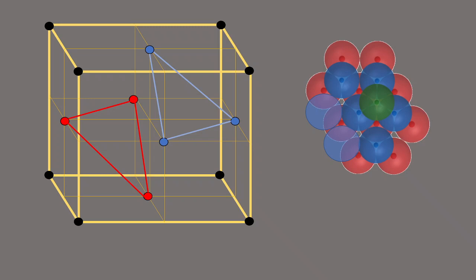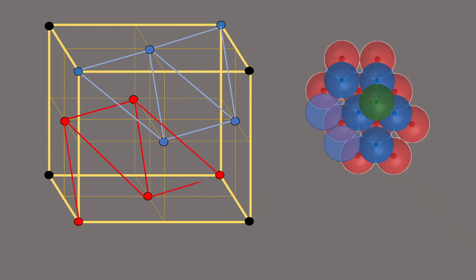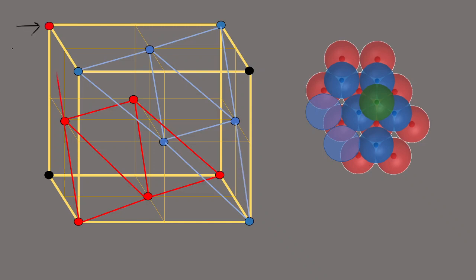Once you have identified these layers, you can extend them. You can see the plane of this triangle and extend it — these two points also belong to the same layer. Similarly, you can extend the red layer — this point here also belongs to the blue layer, and you can extend it. Likewise, this point here belongs to the red layer. So we see the red layer as the first layer, and then the blue layer on top of it.